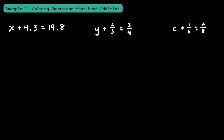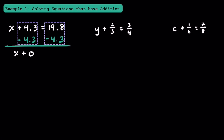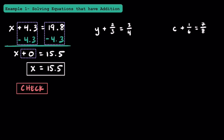Here in example one, we're going to practice solving three equations that have addition. For this first equation, we have x plus 4.3 is equal to 19.8. To solve for the value of x, we're going to subtract 4.3 from both sides. These two numbers are opposites, so they make 0 when combined, giving us x plus 0. Subtracting 4.3 from 19.8, we get 15.5, so x equals 15.5. Don't forget to check: adding 15.5 and 4.3, we get 19.8, so we did this correctly.